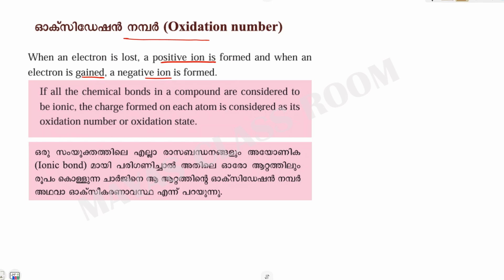We call it plus 1, plus 2, minus 2, minus 1. We call it positive and negative. We represent the oxidation number of ions. We call it the oxidation number — zero. If all the chemical bonds are considered to be ionic, the charge formed on each atom is considered as its oxidation number or oxidation state.